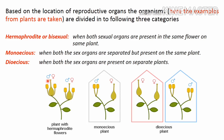This is a male flower and this is a female flower. So these types of plants or organisms having both sexes located on the same organism or same plant are called hermaphrodites.